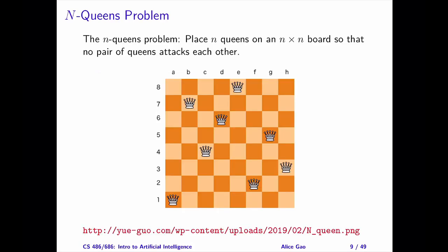This is the N queens problem. We have an 8x8 chess board. We want to put 8 queens on the board such that no two queens attack each other. A queen attacks anything in the same row, in the same column, and in the same diagonal. This is also a classic constraint satisfaction problem.